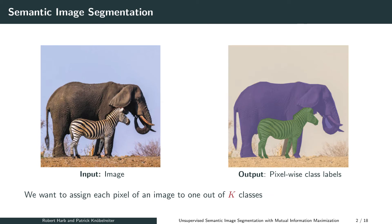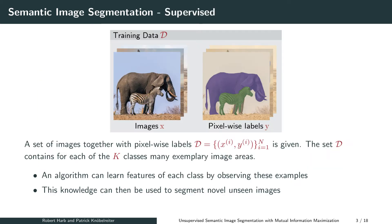Semantic image segmentation is a common image processing task required by a variety of applications. Given an input image, we want to assign each pixel a class label. Current best-performing approaches tackle this problem by using large datasets of pixel-wise labeled images. Algorithms can then learn features of particular classes by observing given labeled images, and this knowledge can be used to segment novel unseen images.